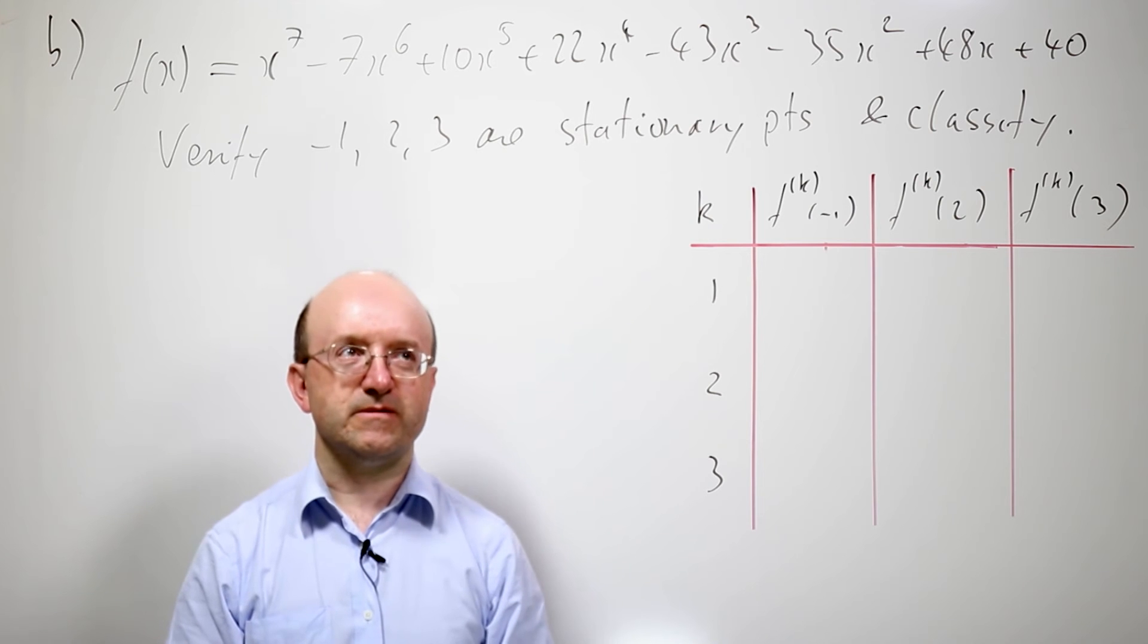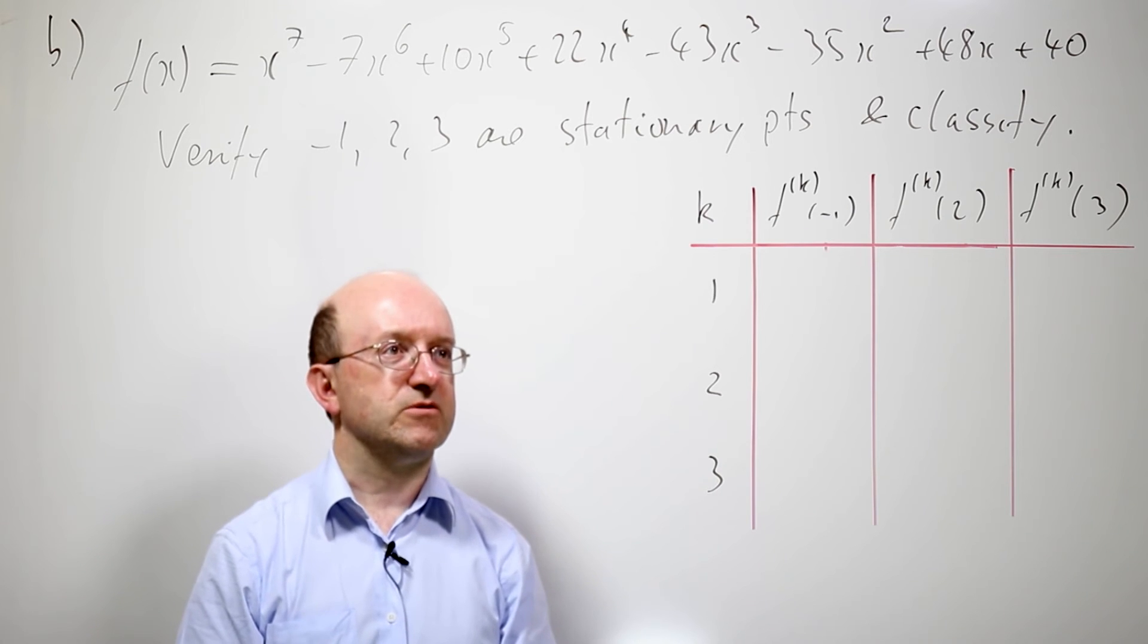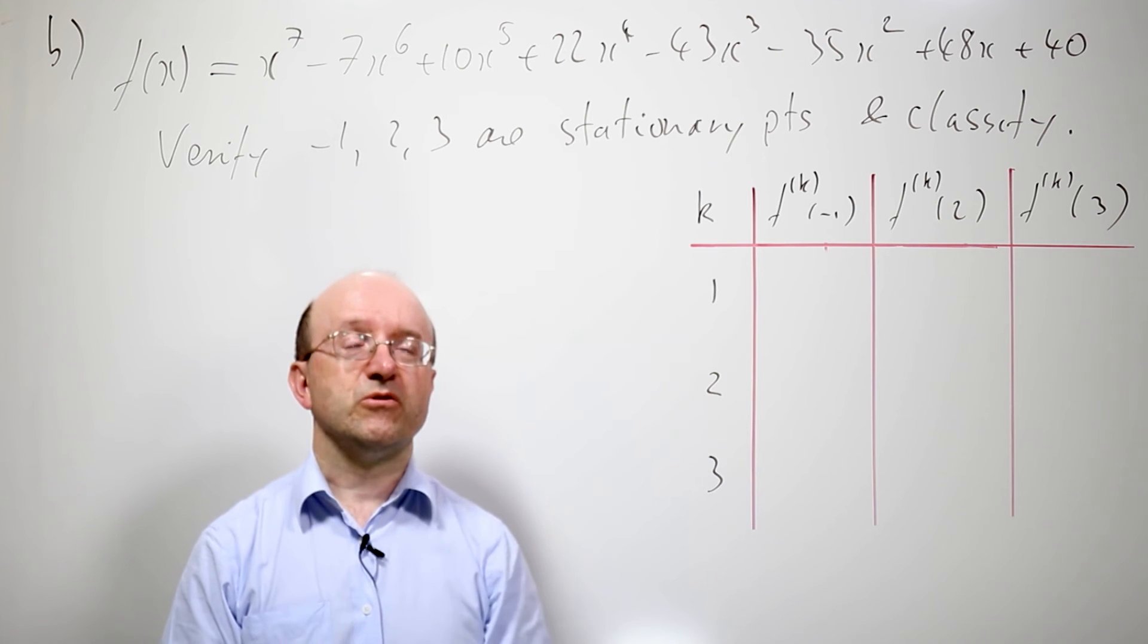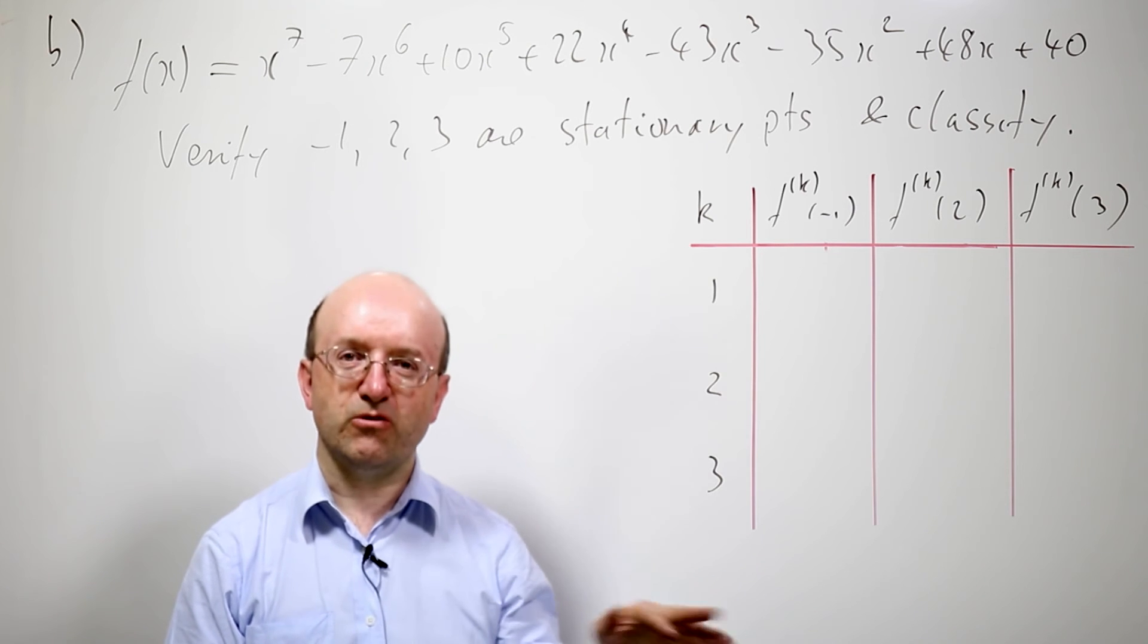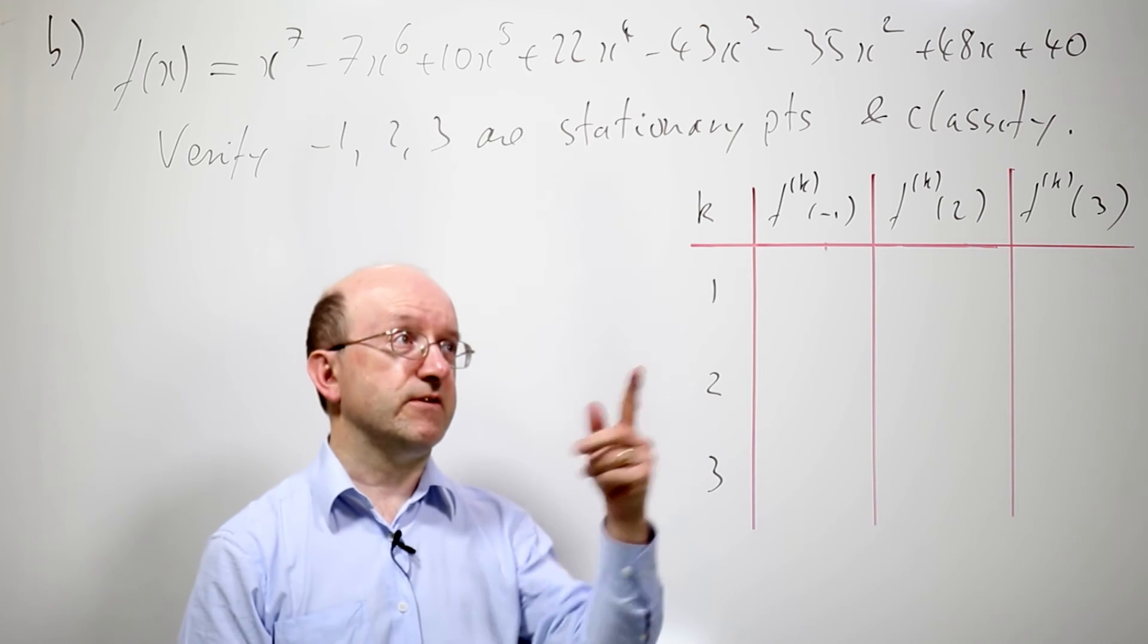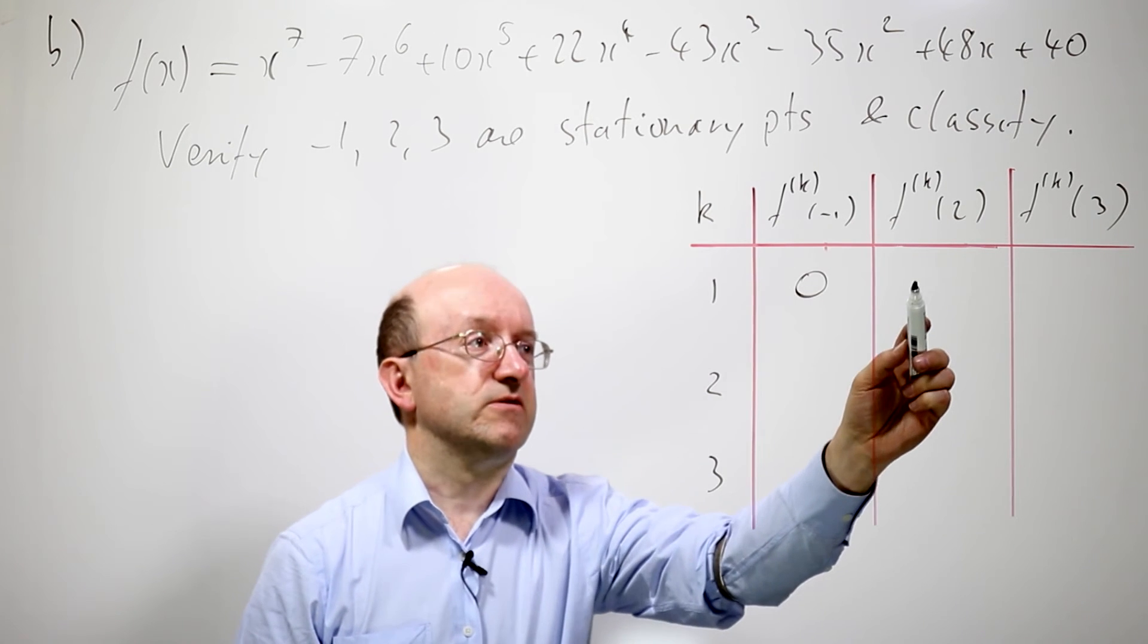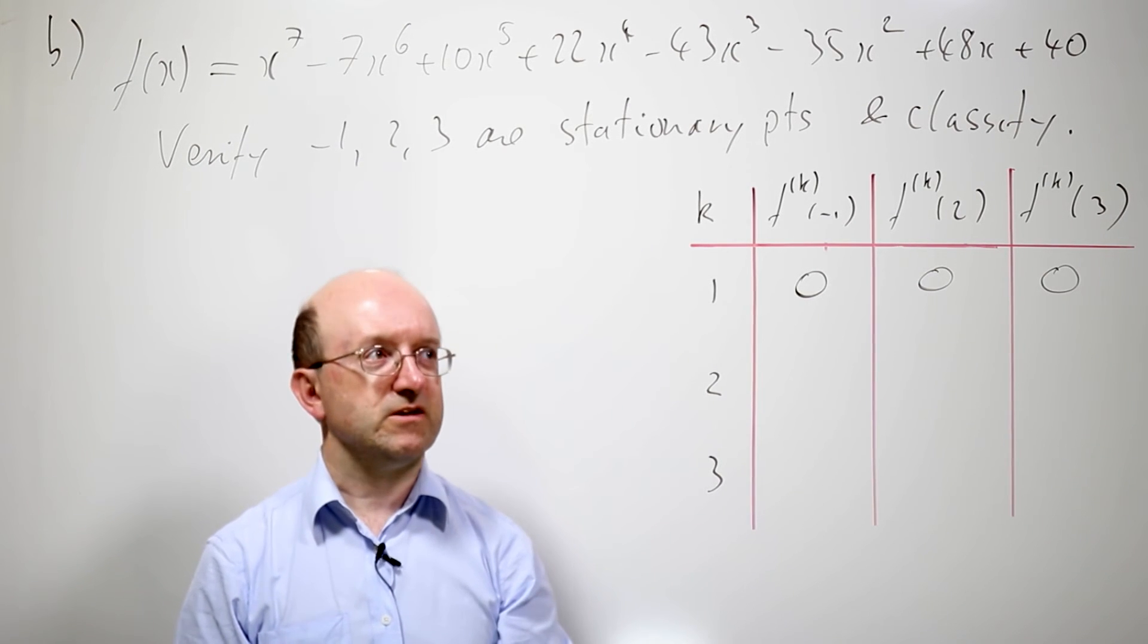So rather than write down the actual polynomial and its derivatives, I'm just going to create a little table here of all the appropriate values. So the first thing we need to know is that they are stationary points. We need to know that the derivatives vanish there. Well, in fact, that's what we do. We differentiate this polynomial here and get whatever we get. We evaluate at minus 1, which is just, we just take an alternating sum of the coefficients, positive, negative, positive, negative, and so on. And when we do that for this particular polynomial, we need to get 0, showing us that minus 1 is a stationary point. And then we do the same thing at 2 and 3, and we again get 0.